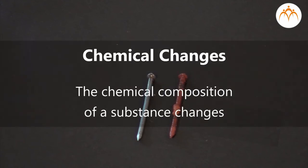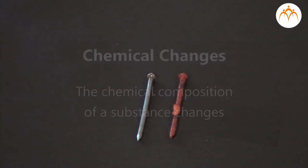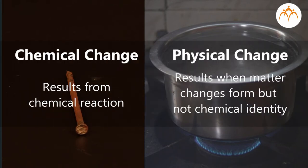The process in which the chemical composition of a substance changes is called a chemical change. A chemical change results from a chemical reaction.